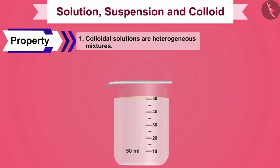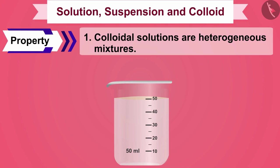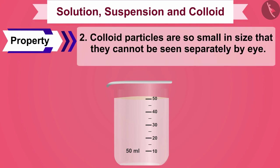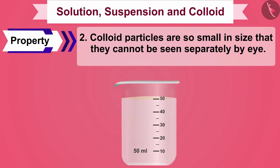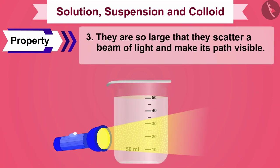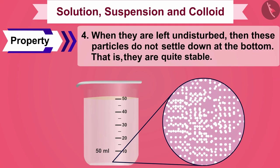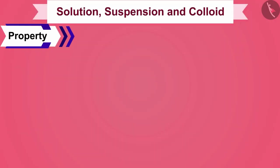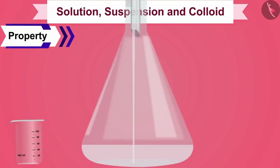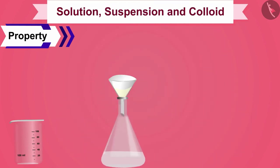From this activity we can conclude the properties of colloidal solutions: one, colloidal solutions are heterogeneous mixtures; two, colloid particles are so small that they cannot be seen separately by the naked eye; three, they are large enough to scatter a beam of light and make its path visible; four, when left undisturbed, colloid particles do not settle down at the bottom, meaning they are quite stable. If we filter this colloidal solution with filter paper, we cannot separate milk and water, so colloids cannot be separated by filtration.